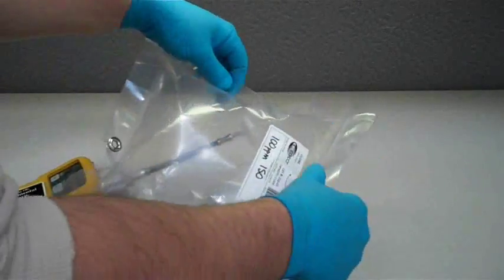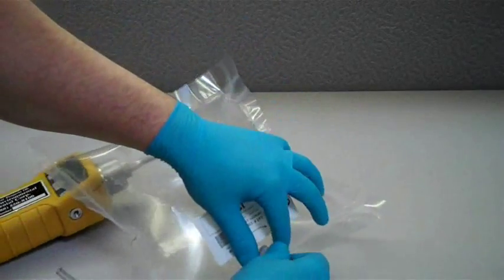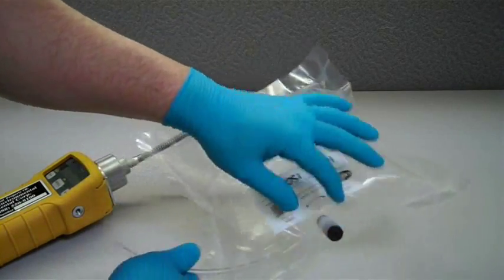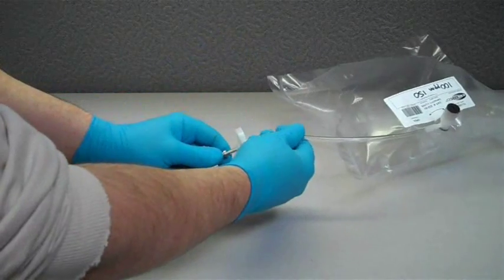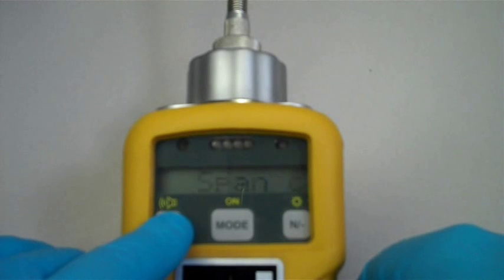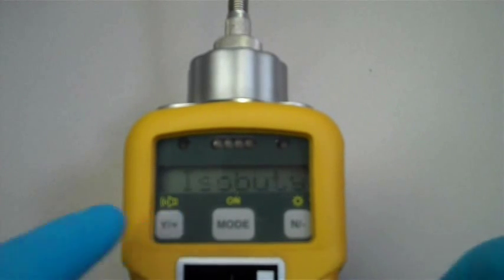Once the fresh air calibration is complete, open the valve on your Tedlar bag and make a secure connection to the probe tip of the unit. The display will read span cal. Press the Y button to start the span calibration.